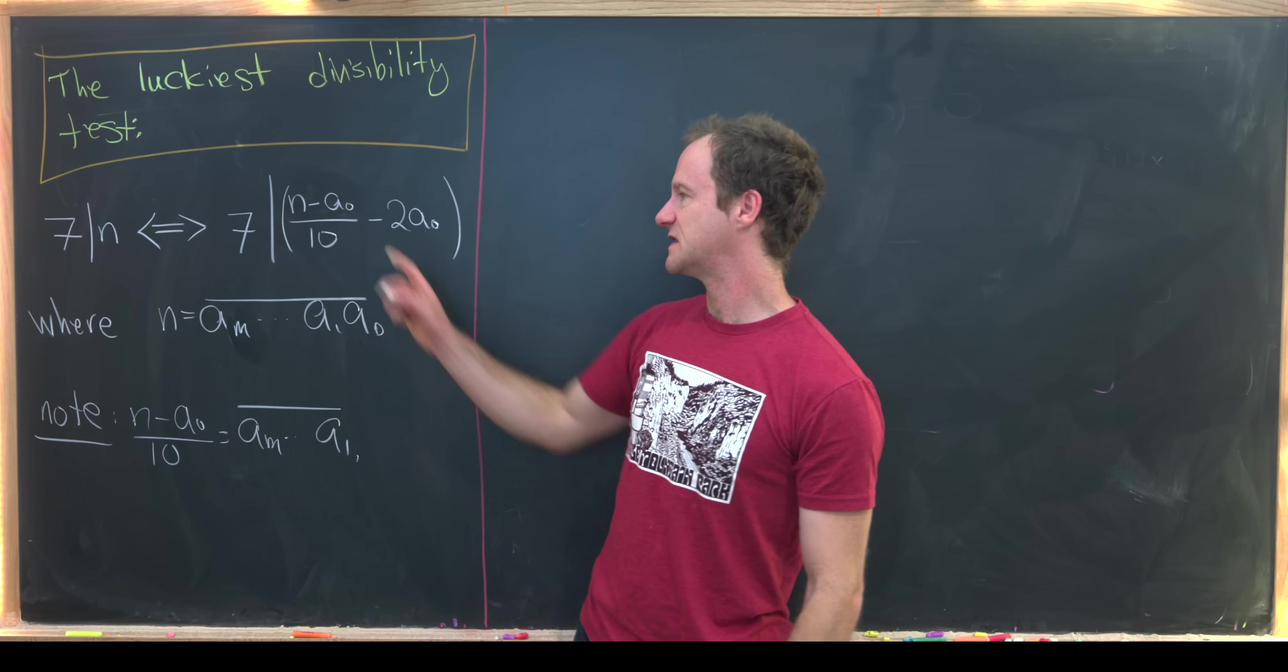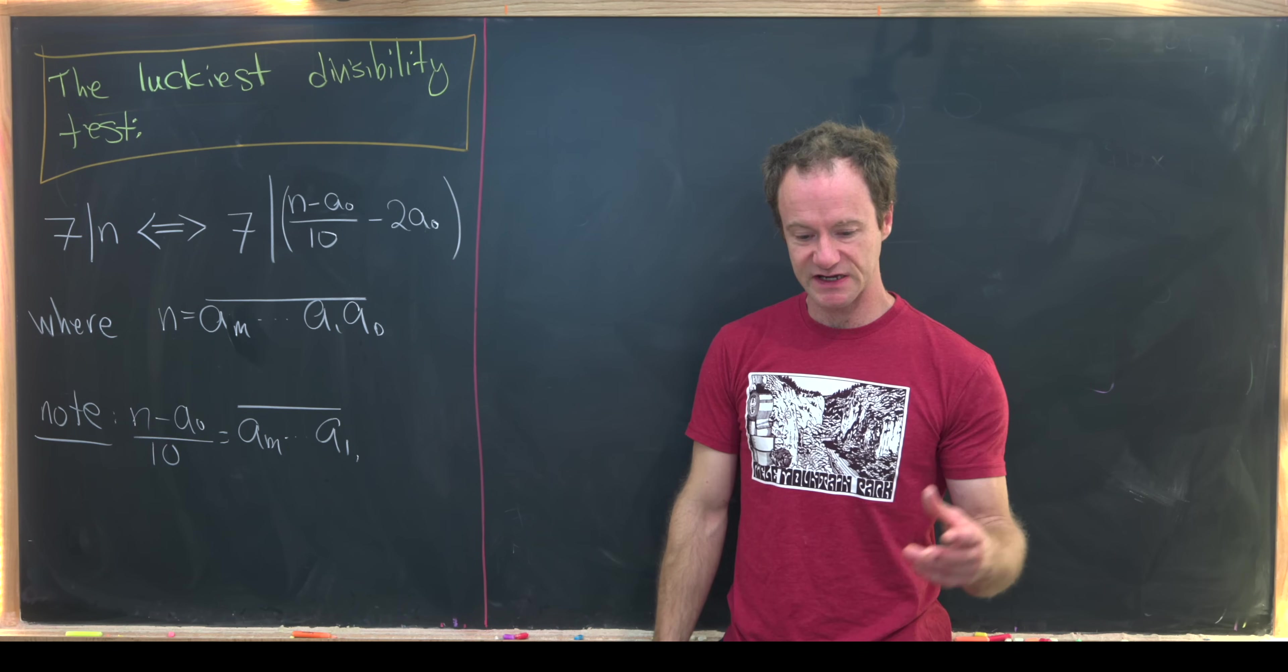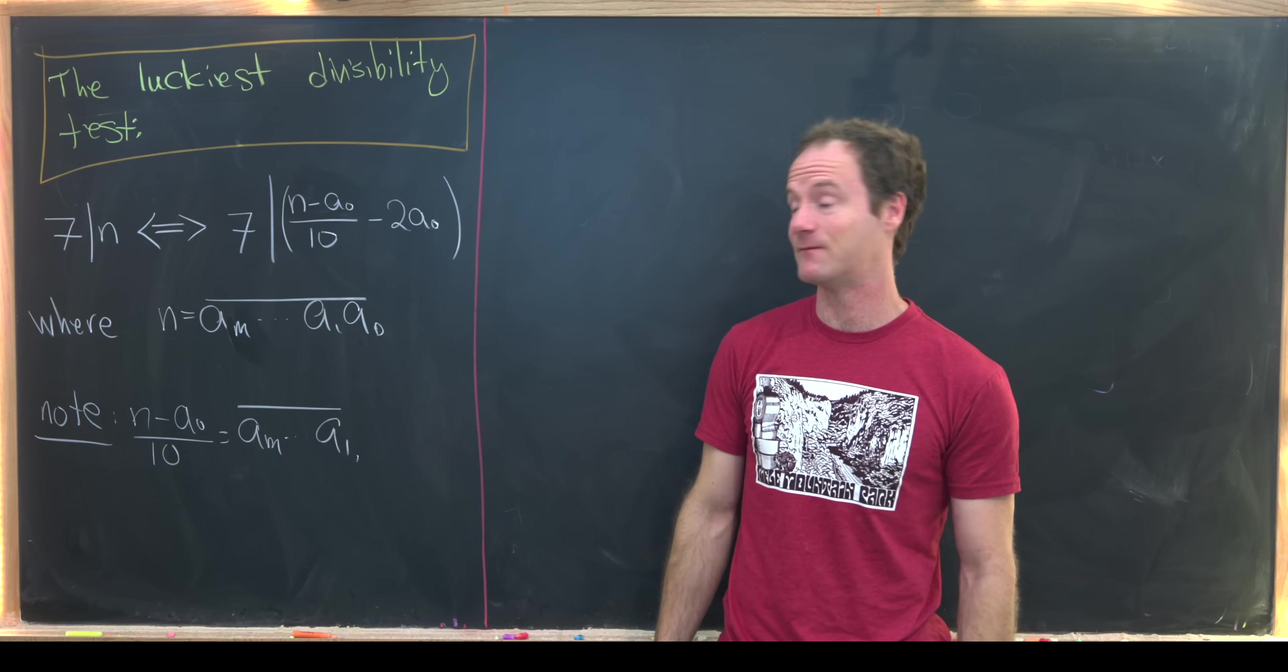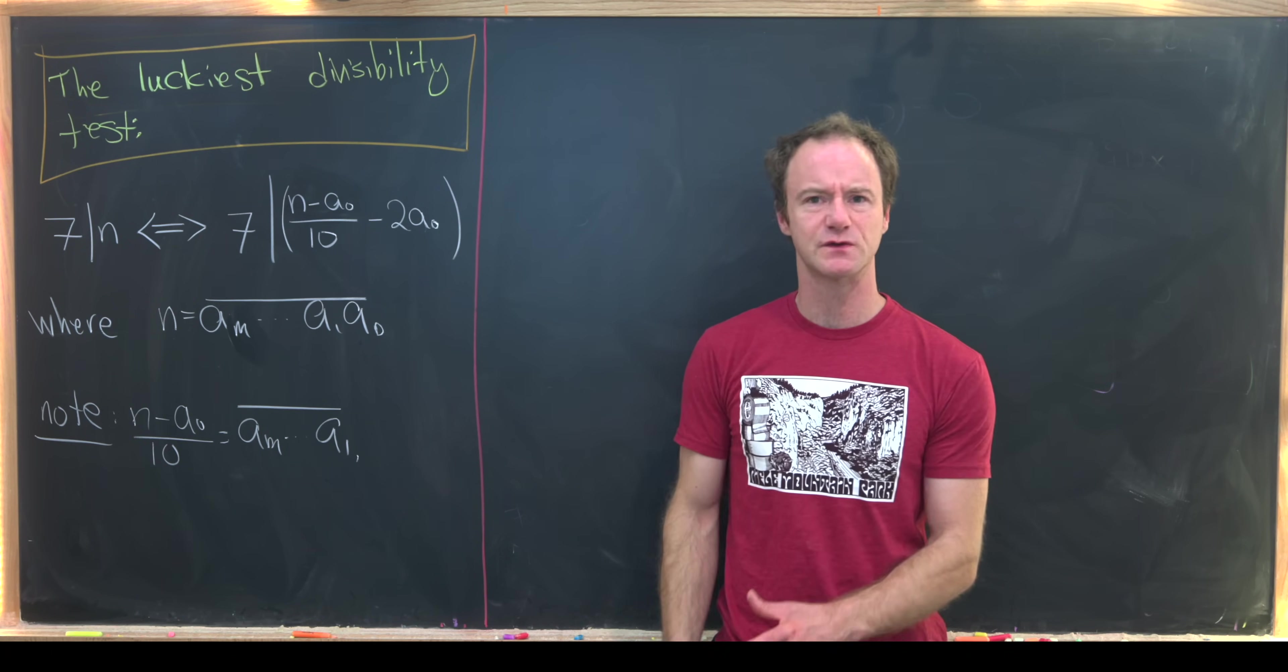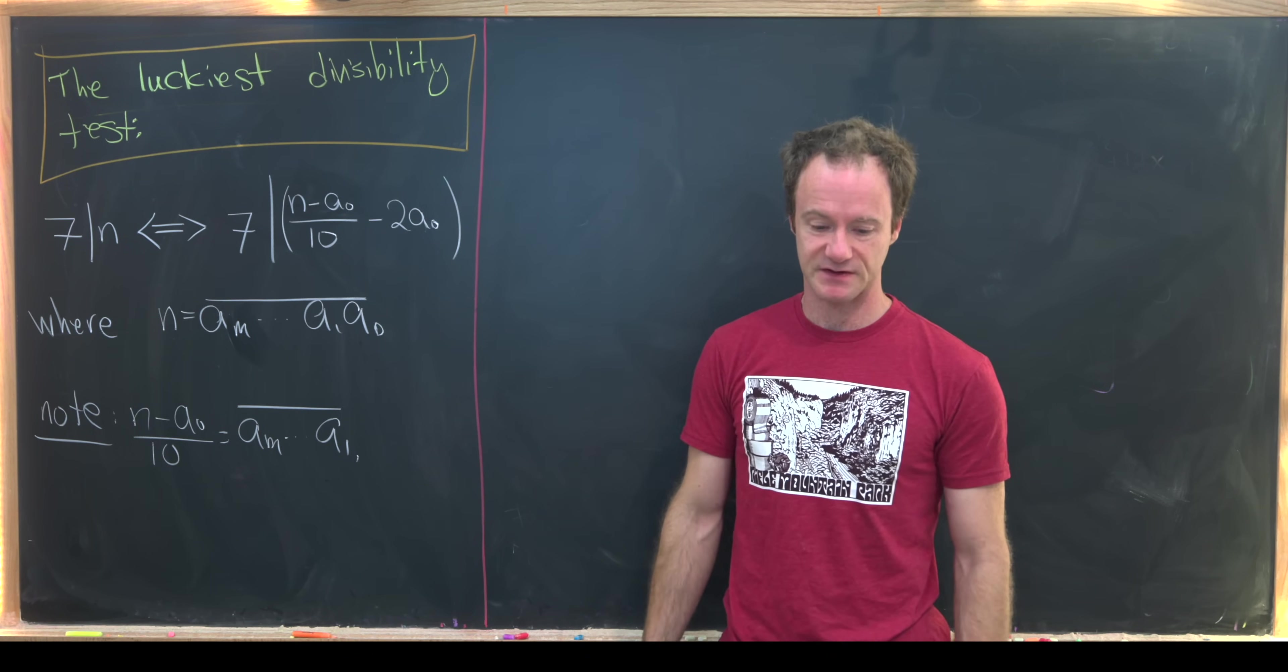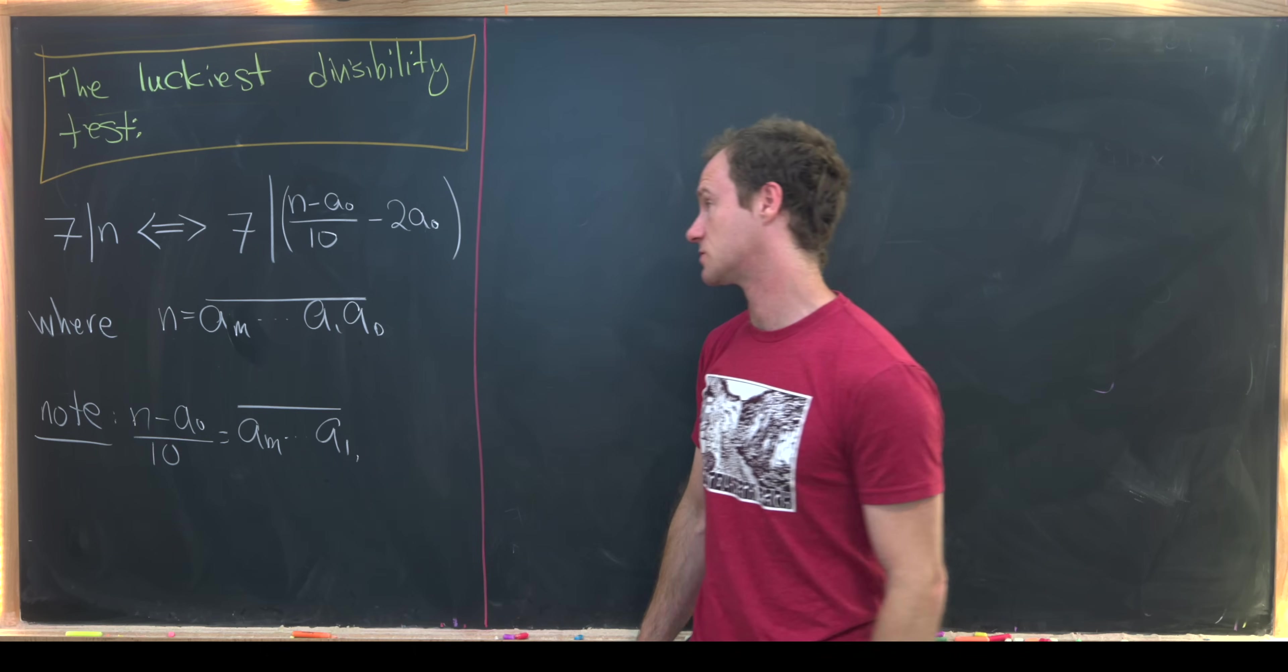So this process here creates a smaller number, which is actually very nice because we can continue creating smaller and smaller numbers until we have something that's obviously divisible by seven. Okay, so I'm going to prove this one way really quick, just using some properties of divisibility, and then I'll prove something that's slightly stronger involving modular arithmetic.